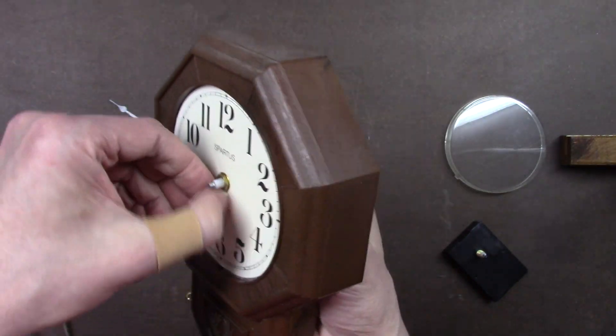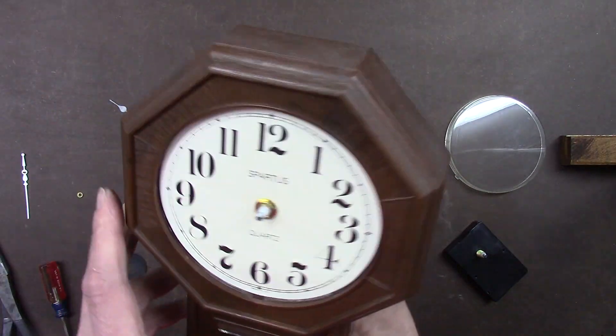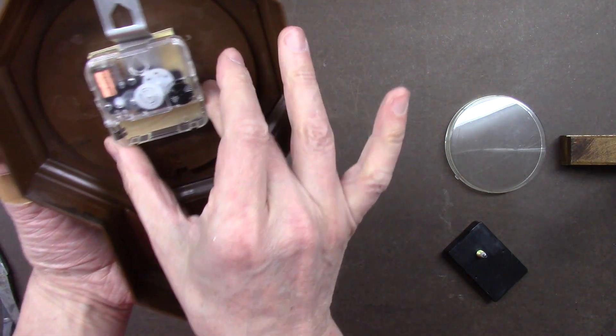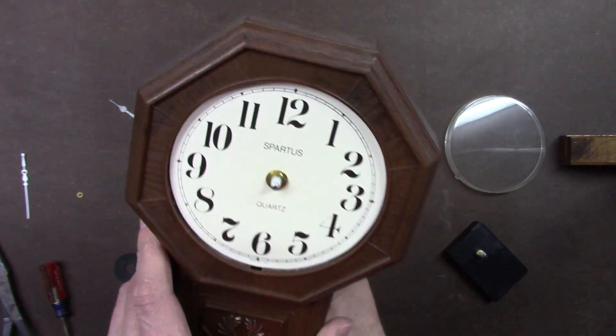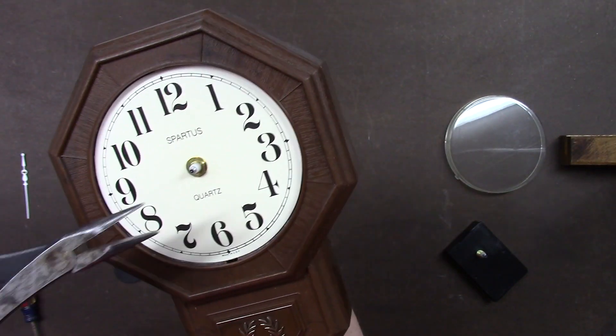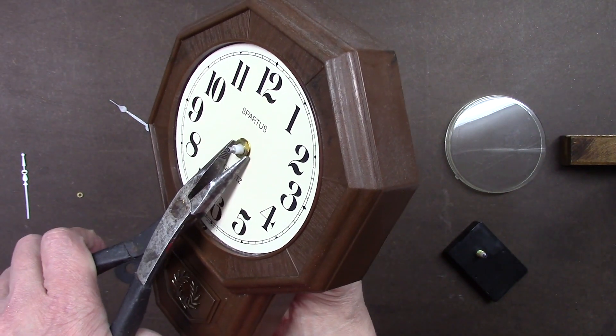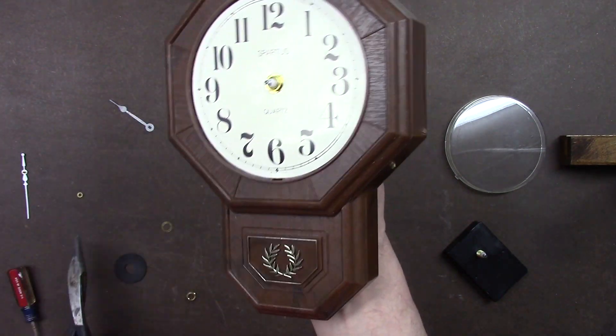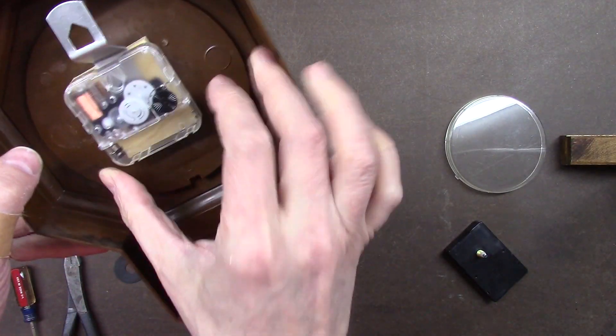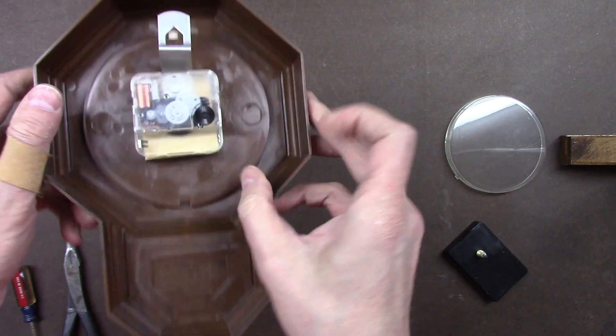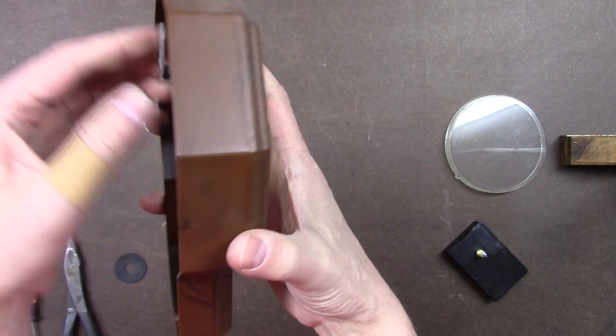Now get it finger tight. Make sure it's lined up well. Use your needle nose pliers and tighten the nut a few turns there. Don't over tighten it, it'll break the movement or crack the housing. So be very careful, very careful.